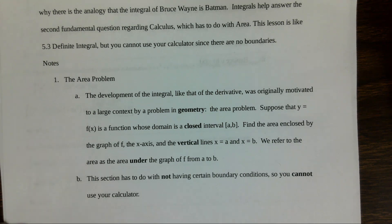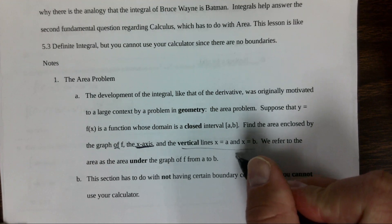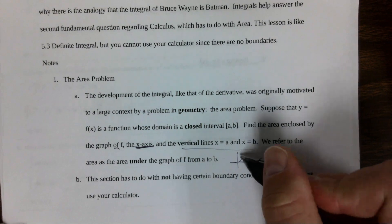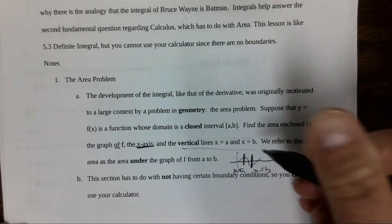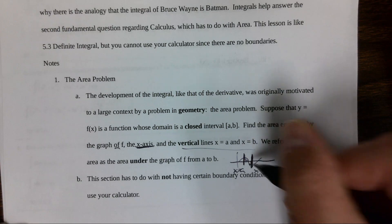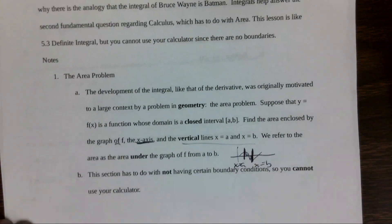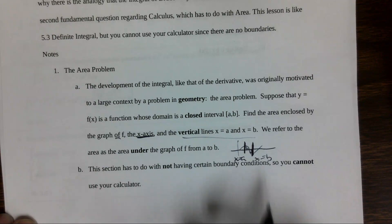Suppose you have f(x) over a closed interval [a, b]; then find the area between f, the x-axis, and the vertical lines. You could have it from x = a to x = b and want to add up those areas — they actually partially cancel in the example because they're signed. This section deals with not having certain boundary conditions, so you cannot use your calculator.